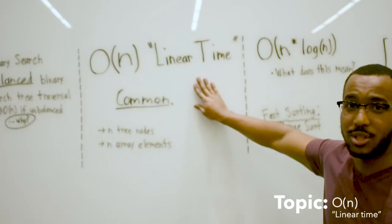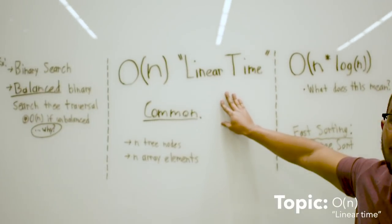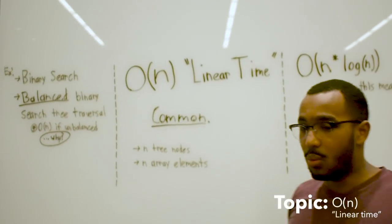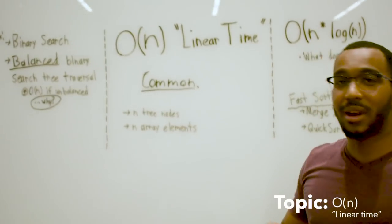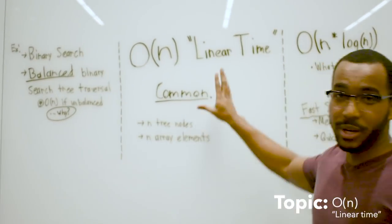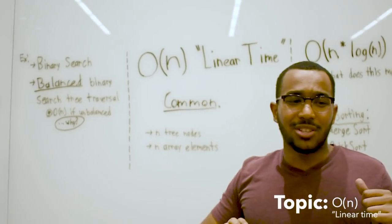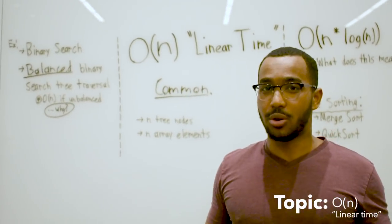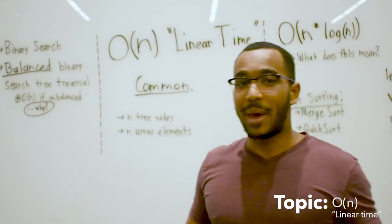O of n time is the most common. O of n time is linear time. Whether you have n tree nodes, whether you have a string length n or an array length n, this is when you're going to see a linear time algorithm because you're going to be touching all n of the nodes.